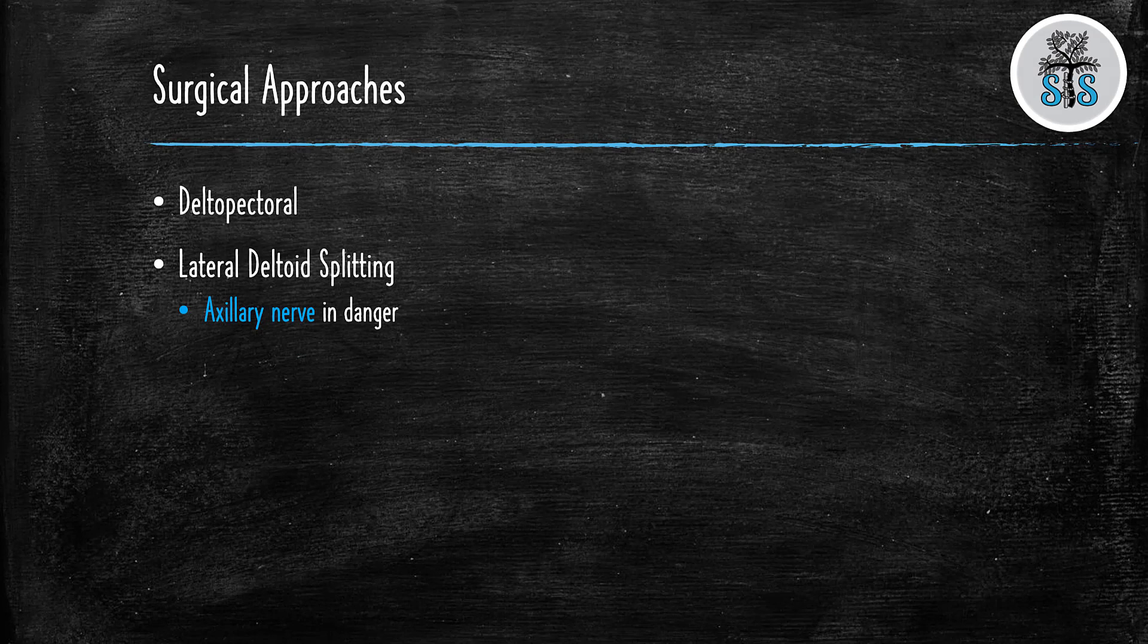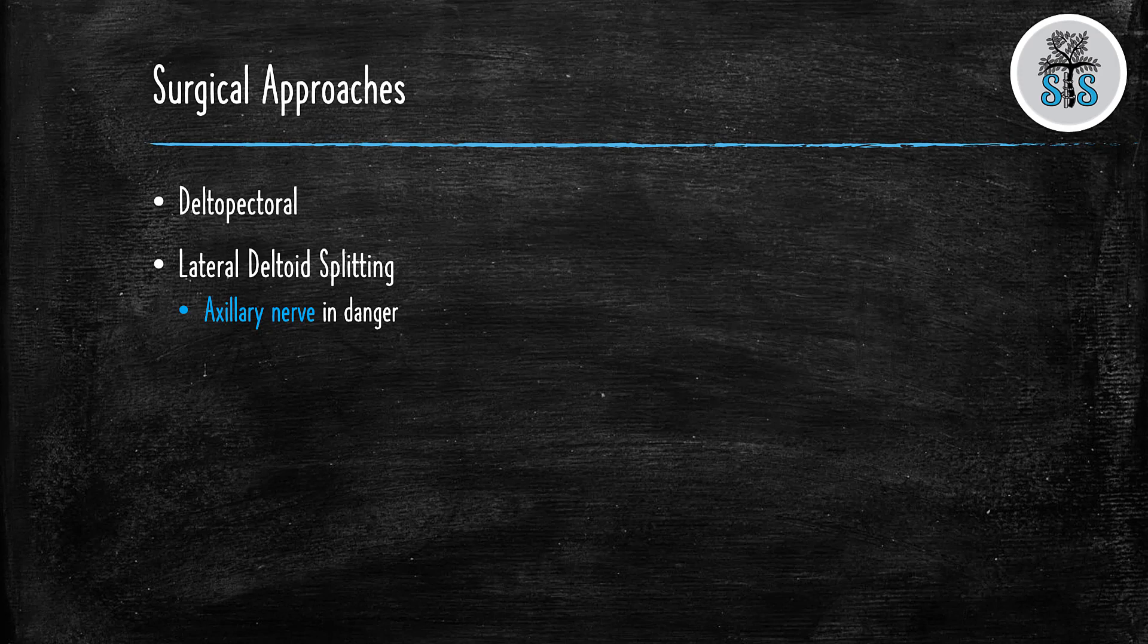So what are our typical surgical approaches when we're going to fix these? Well, we have the delto-pectoral and the lateral deltoid splitting. We're going to go over the delto-pectoral approach in the next coming slides. We're not going to cover the lateral deltoid splitting today, but just know that the most high-yield thing here is that the axillary nerve is in danger when you're doing the lateral deltoid splitting approach as it crosses over the quadrangular space and wraps around the humeral shaft.